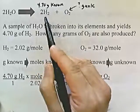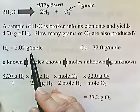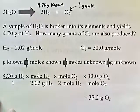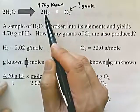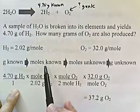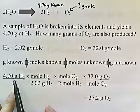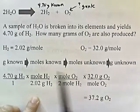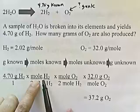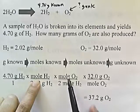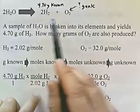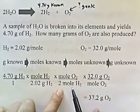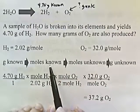H₂ is the known — one mole of H₂ weighs 2.02 grams per mole. O₂ is the unknown — that's 32 grams per mole. We start with 4.7 grams of H₂ over one. To go from grams of known to moles of known, I put 2.02 grams of H₂ on the bottom and one mole of H₂ on top. From moles of known to moles of unknown: I put moles of H₂ on the bottom. Every two moles of H₂ produced means one mole of O₂ is produced, so two moles of H₂ on the bottom and one mole of O₂ on top. We've gone from moles of known to moles of unknown.